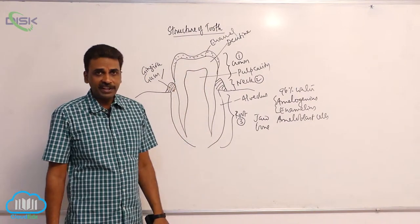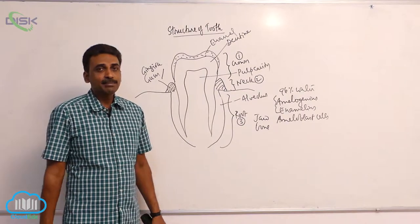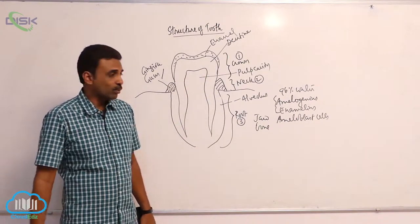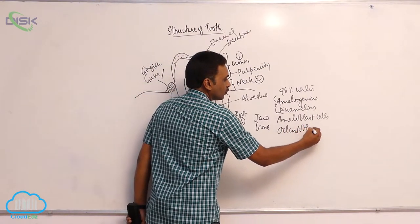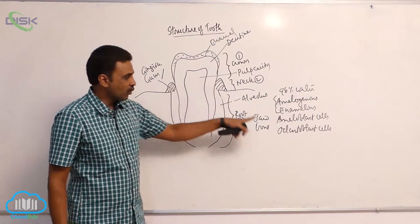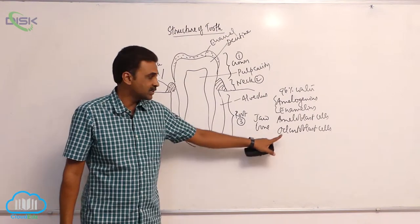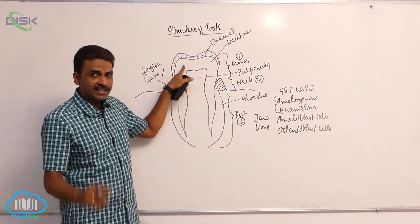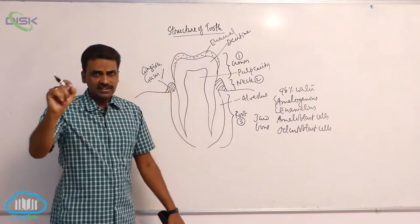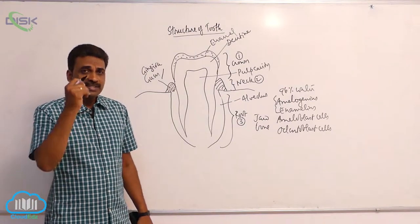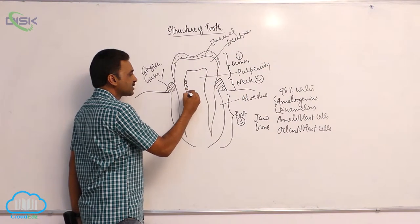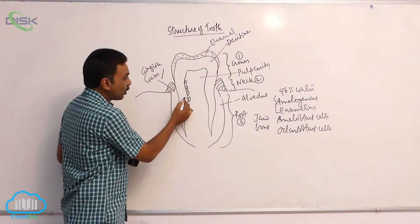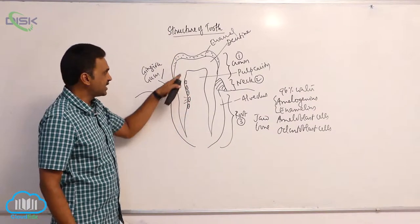Beneath the enamel, we have dentine. Dentine is similar to bone except that Haversian canals are absent. Dentine originates from embryonic cells called odontoblast cells, which are mesodermal in origin. Inside there are cells supplied nourishment by odontoblast cells, some of which also line the pulp cavity. Through small canaliculi, they supply nourishment to the cells present inside the dentine.